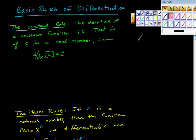Here's some basic rules of differentiation. The first one is the constant rule, and it says this: the derivative of a constant function is 0. That is, if c is a real number, then d/dx of c is 0.